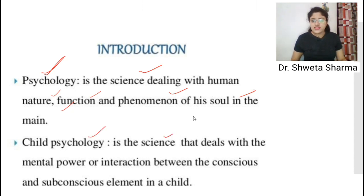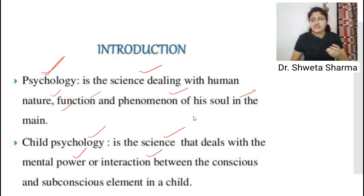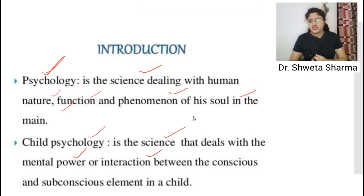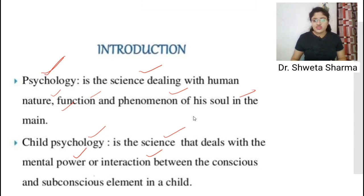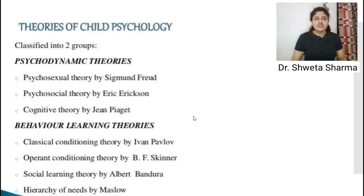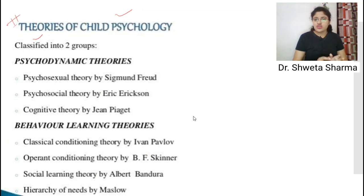Child psychology is a science that deals with the mental power or interaction between the conscious and subconscious elements of the child. In a child there is a conscious level and a subconscious level, and maintaining the interaction between these two is called child psychology. Now we move on to the theories of child psychology.